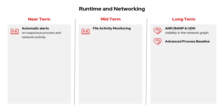In the long term, we plan to expand automatic alerting to cover suspicious network execution, introduce an advanced process baseline to help manage large numbers of deployments without manual effort, and extend the network graph to include new isolation types, such as admin network policies, baseline admin network policies, and user-defined networks.